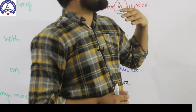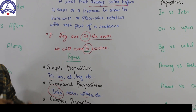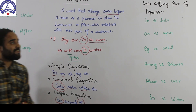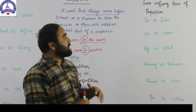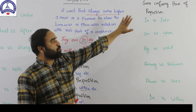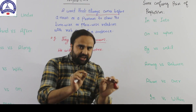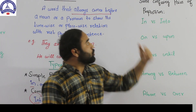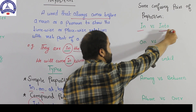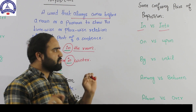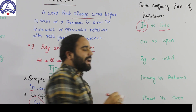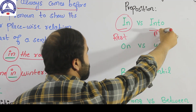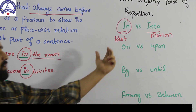Now we are going to explain some confusing pairs of prepositions, and I will use Urdu as well to make it clear for those who have difficulty understanding in English. The first pair is 'in' versus 'into'. When we are talking about something that is at rest, we use 'in'. When we are talking about something that is in motion, we use 'into'. So, for rest we use 'in' and for motion we use 'into'.